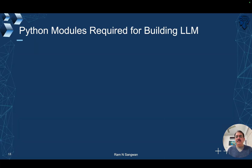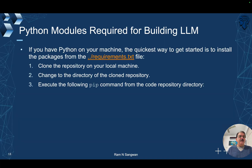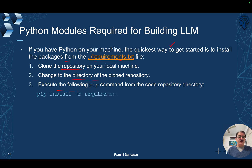If you already have Python installed on your machine with an existing setup, the quickest way to get started is to install packages directly from the requirements.txt file. Clone the repository, change to the directory, and execute the pip command: pip install -r requirements.txt. This installs all the required content for the course.